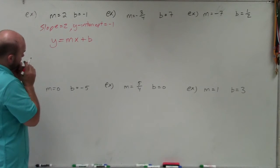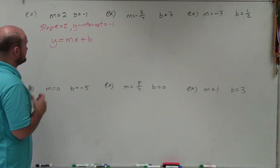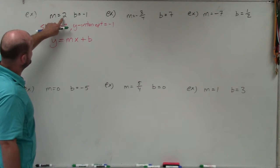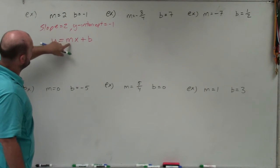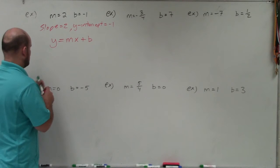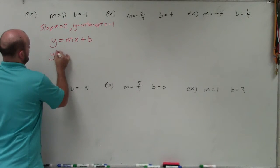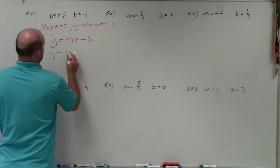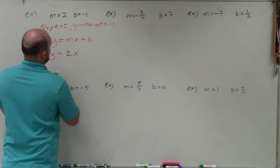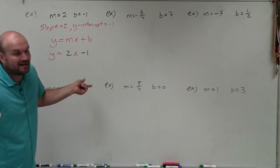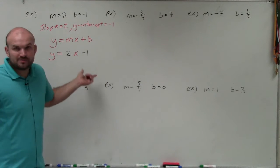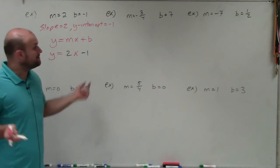So to write our equation in slope-intercept form, all we're basically going to do is plug in 2 for m and negative 1 for b. So therefore, it looks something like this: y equals 2x minus 1. You could say plus negative 1, or just write it as minus 1. And that's it.